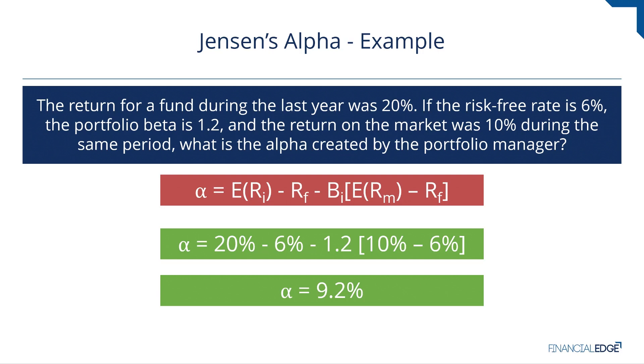Jensen's alpha is not only comparing the return of a portfolio versus the market, but it's also comparing the amount of risk taken on versus the broad market.